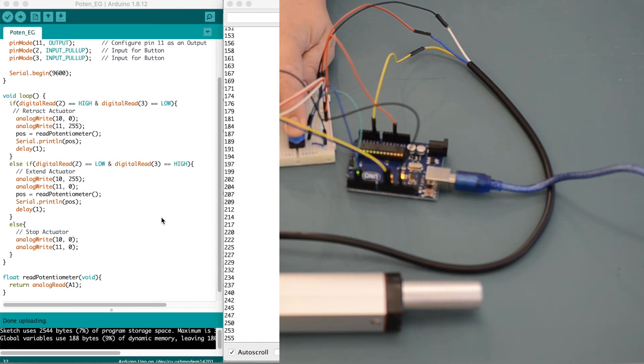So once the linear actuator moves forward, the position moves up, and once I retract it, the position goes down.